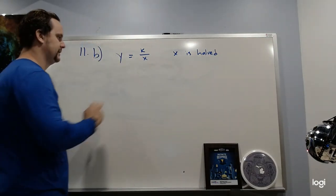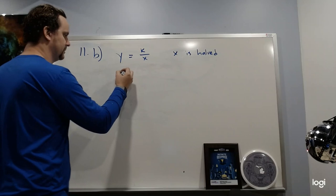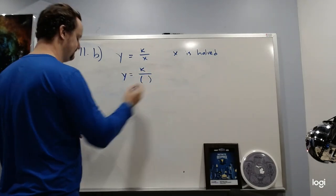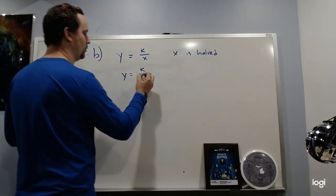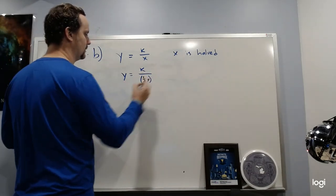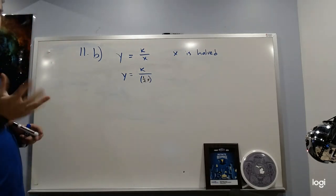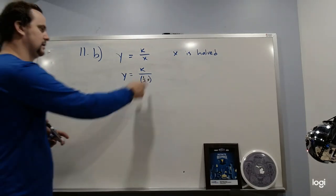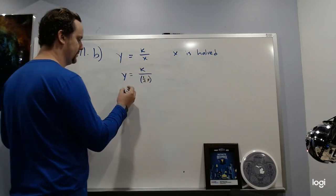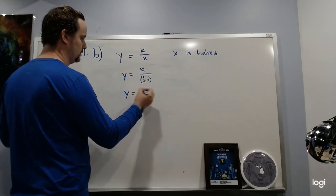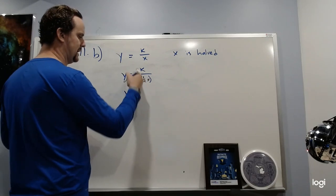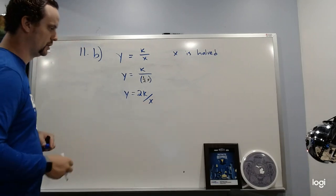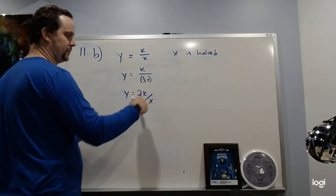All right, X is halved. That means that X is going to be one-half. So I'm going to rewrite this again just like I did before, and I'm going to put in one-half X. All right, now that one-half is on the bottom, so I can go ahead and clean this up a little bit. And I'm going to end up with the half on the bottom, so it actually becomes 2K over X. So this whole thing was multiplied by two.